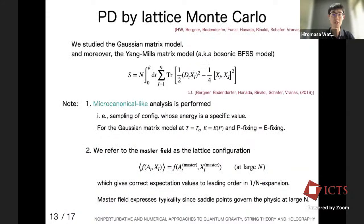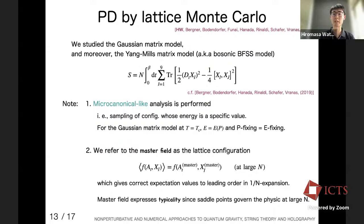Going back to slide 13: for the Yang-Mills matrix model, can adding higher-order interactions like (X_i X_j)^4 be relevant? Answer: It can be possible. The important point is that we want to consider strongly-interacting gauge theory, since we have discussed partial deconfinement in the weak-coupling approximation. In the strongly-interacting model, one could also consider adding higher-derivative or higher-order terms.